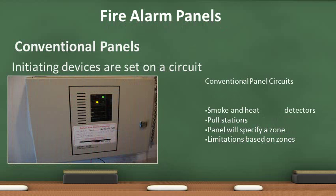The initiating devices for conventional panels are set on circuits called zones. The zones will have a series of devices such as smoke, heat, or pull stations, but will not specify their locations. If possible, ask the property manager or owner to have the fire alarm company provide a map of the locations of the zones at the fire alarm panel. It is much easier to have a general location to investigate.